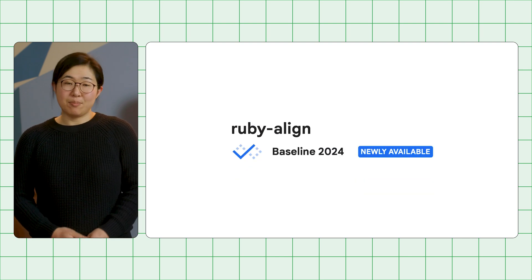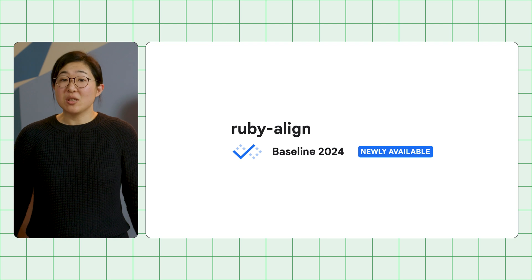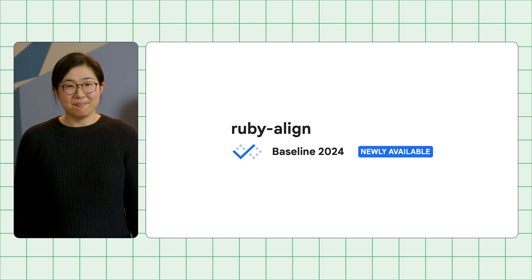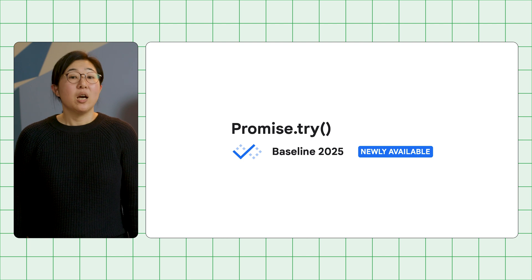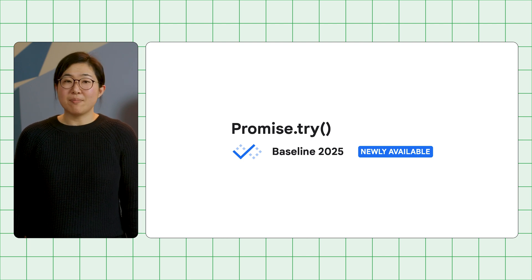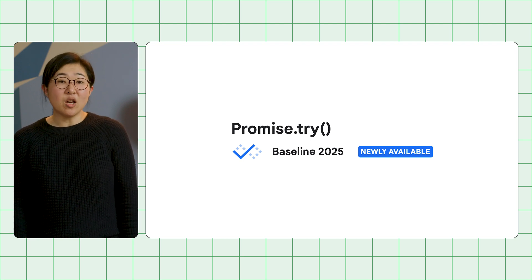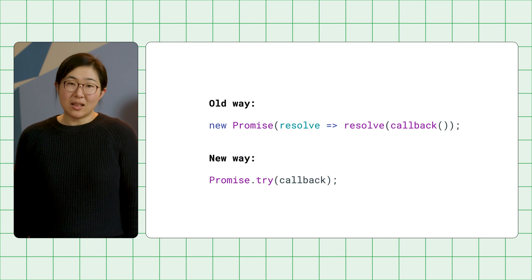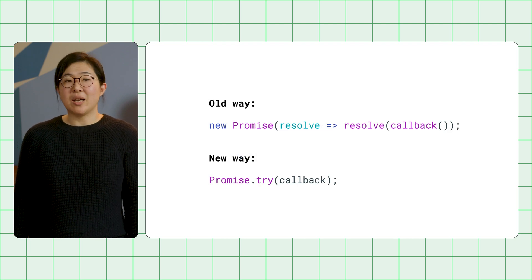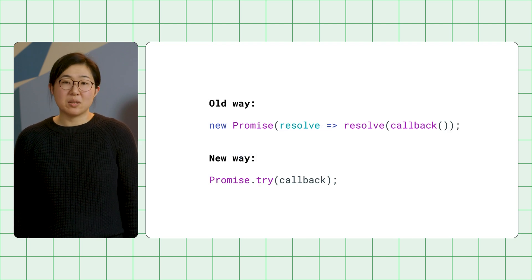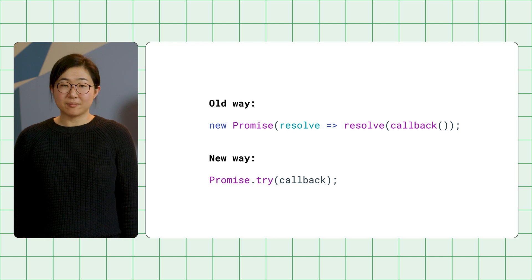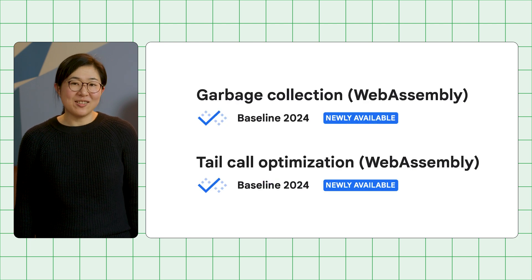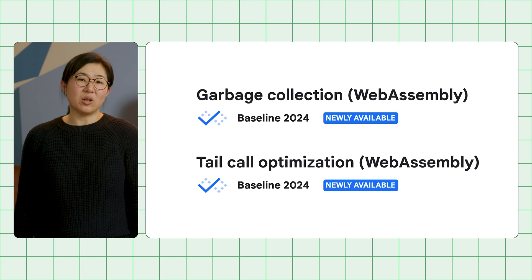With the ruby-align CSS property, you can specify alignment of ruby base text and ruby annotation text. Promise.try is a convenience method to make error handling for synchronous requests — using this, you can eliminate callback functions when you try to request with promise resolve. WebAssembly now supports garbage collection and tail call optimizations.